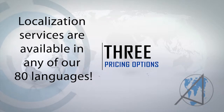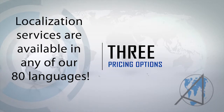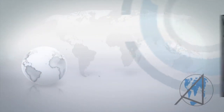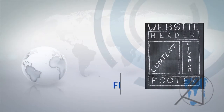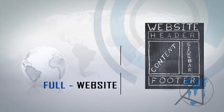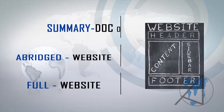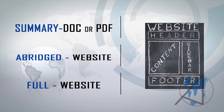For clients looking to localize their website in any of the 80 languages we do, there are three different pricing options. One is to do the full website itself. One is to do an abridged website such as the home page, the contact page, and key product pages. And one is to do a two or three page summary of the company, which we can prepare in a doc or PDF format in any of the 80 languages that we provide.